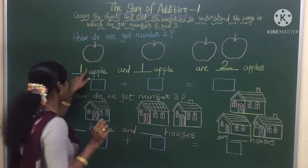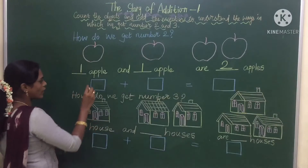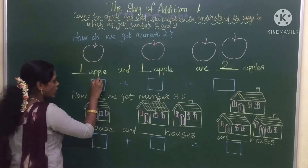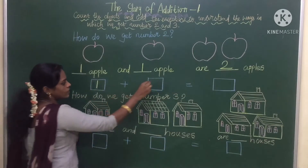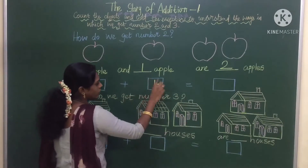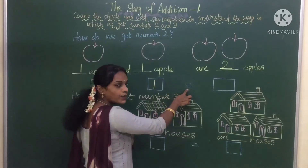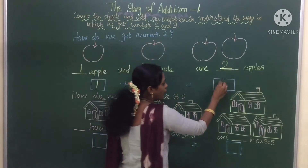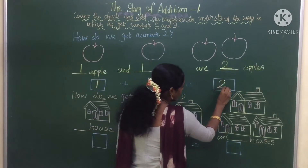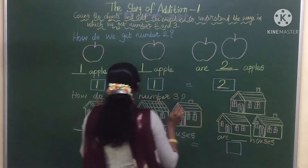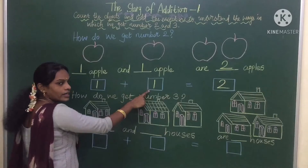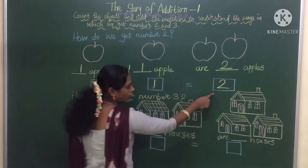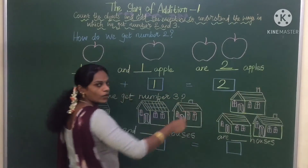Now in the same way, in this box we are going to write: one plus one is equal to two. Correct? So, one plus one is equal to two.